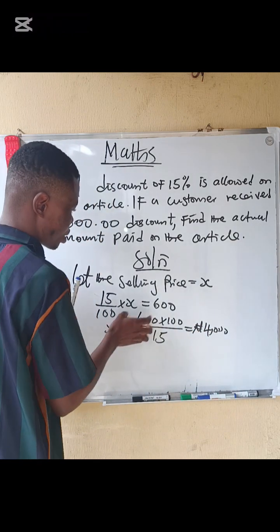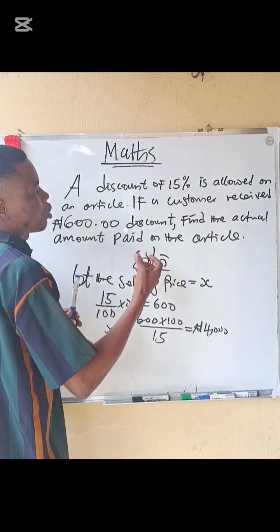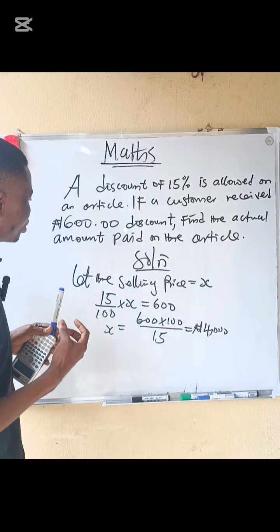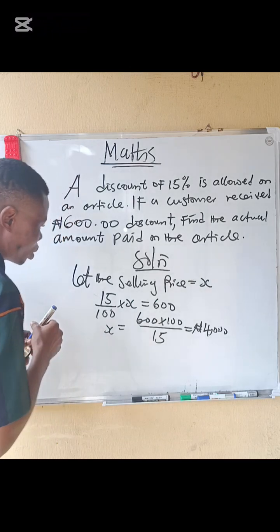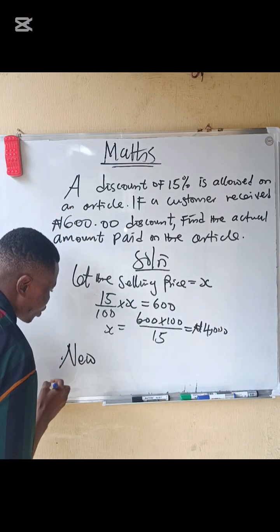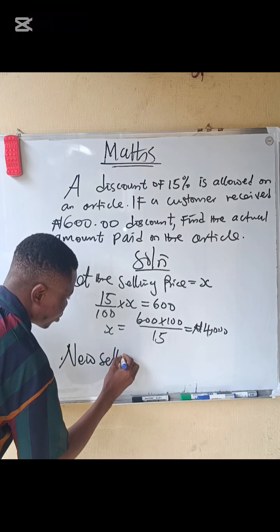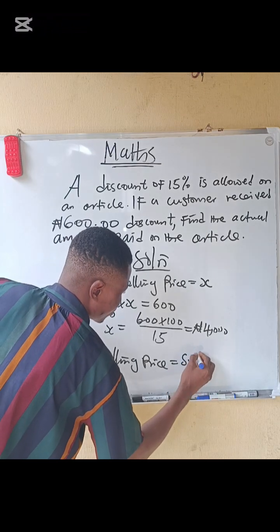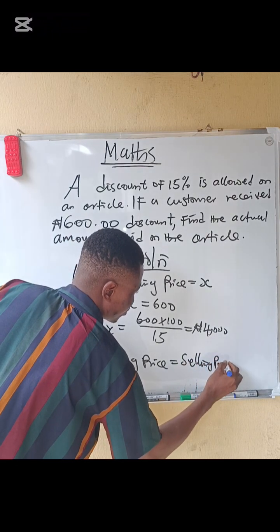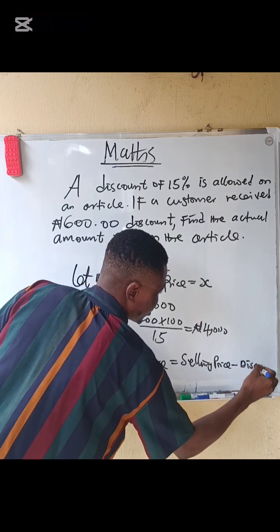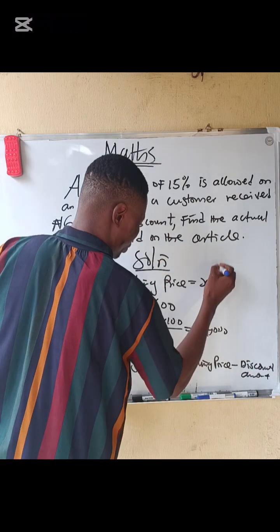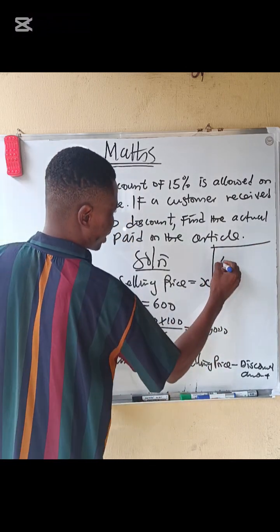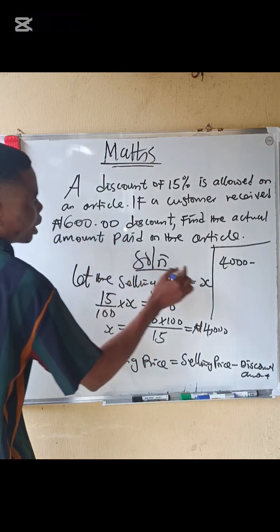So 4,000 naira is the original selling price of the article. Now they ask us to find the actual amount paid. The new selling price equals the selling price minus the discount amount. So that is 4,000 minus 600.